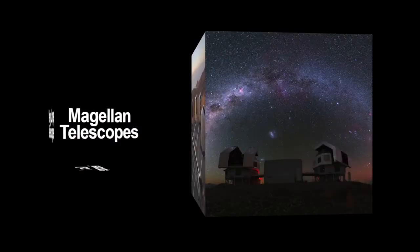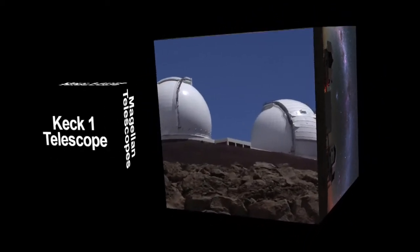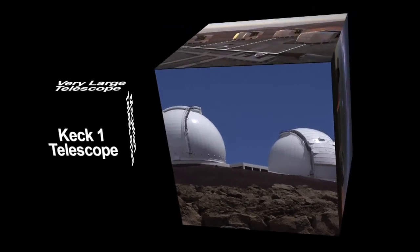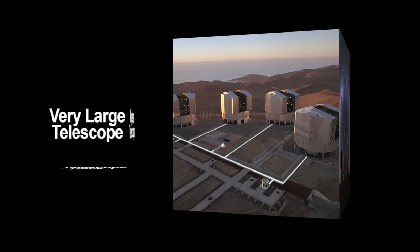The team used one of Carnegie's 6.5-meter Magellan telescopes in Chile to observe five of the Segway 1 stars. Another was studied with the 10-meter Keck 1 telescope in Hawaii. The final star was identified and measured by a competing team using the European Southern Observatory's 8.2-meter Very Large Telescope, which is also in Chile.